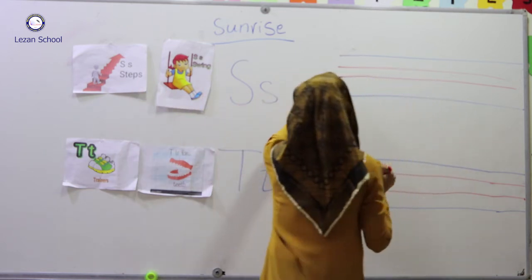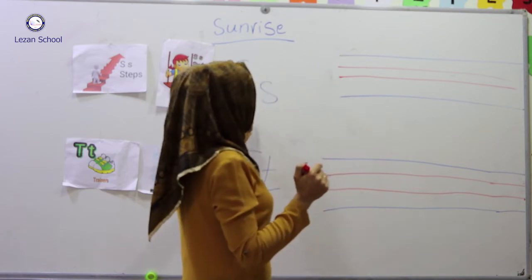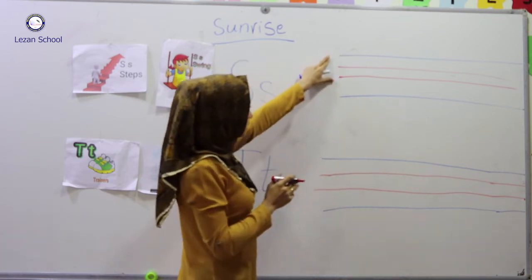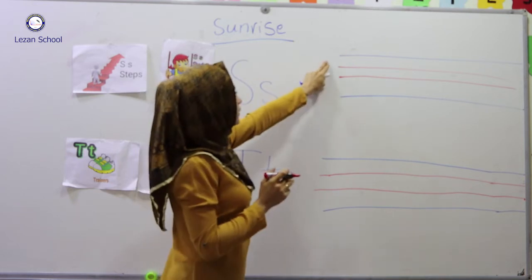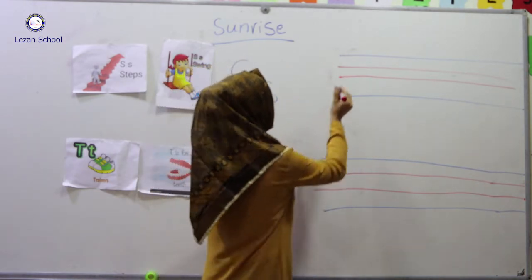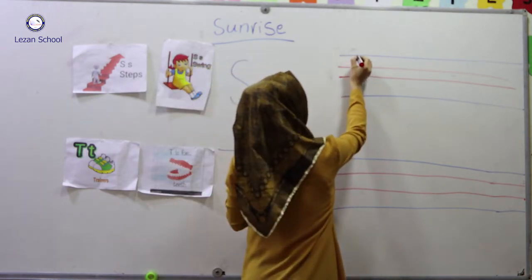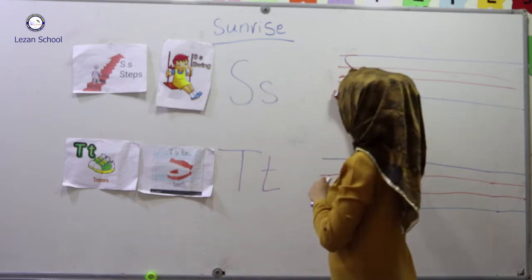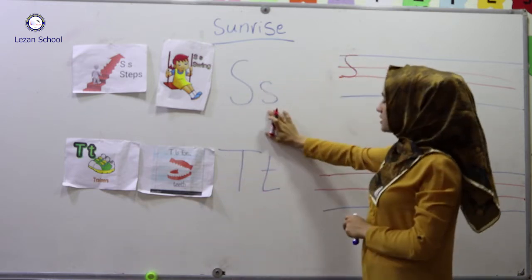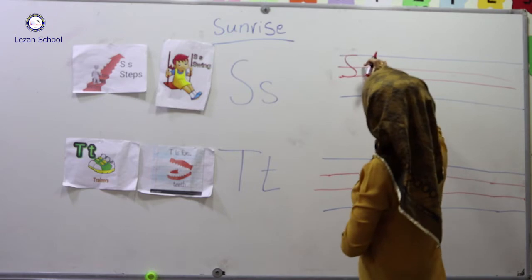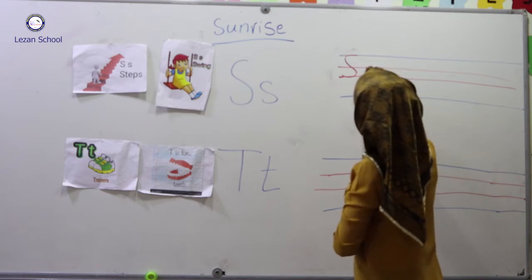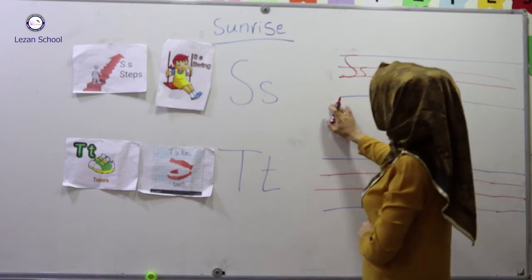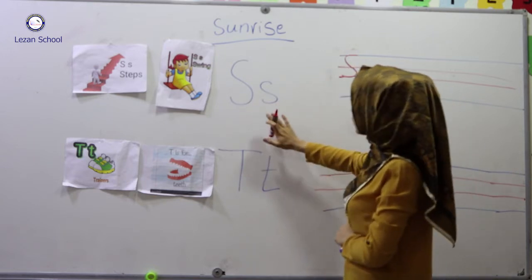Now, let us know how to write it down: C capital and C small. For C capital, we only need three lines: one, two, three. This is C capital — it's just like a duck. And this is C small; we only need these two lines for C small.